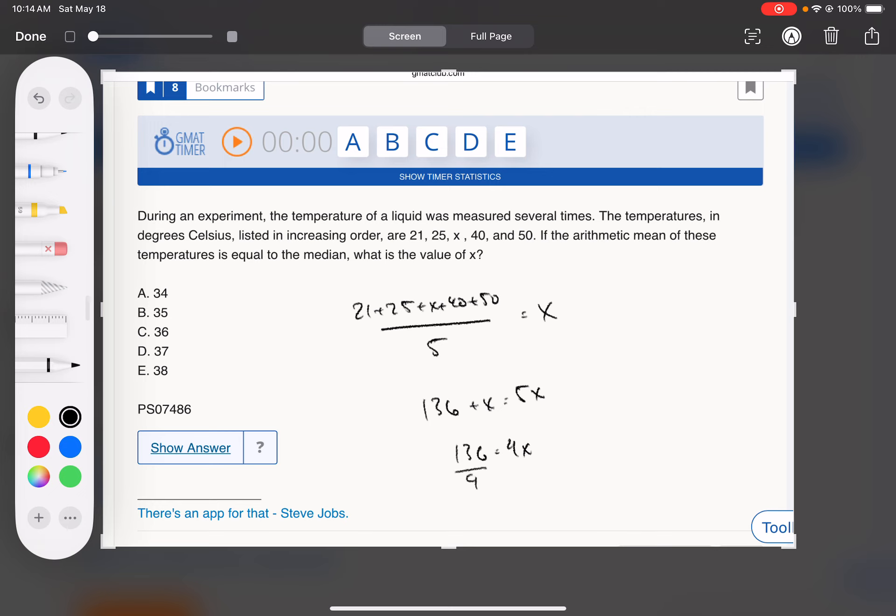And so 136 over 4. Well, 4 would divide by 2. 68 divided by 2 is 34. What was that doing? That's our answer. Done.